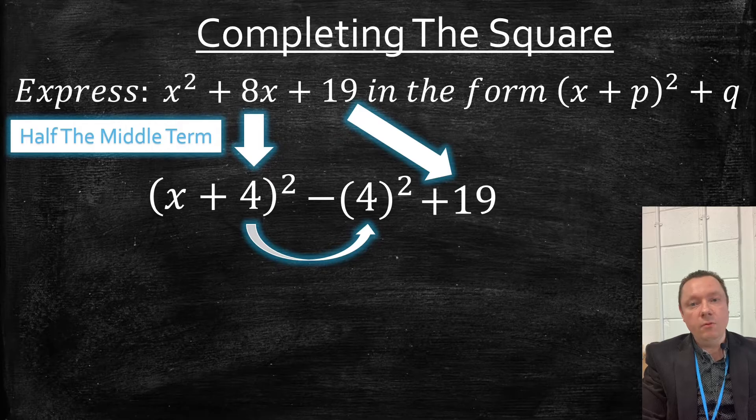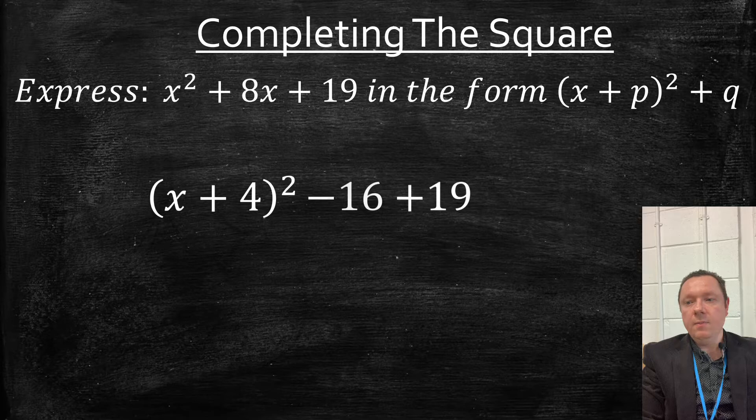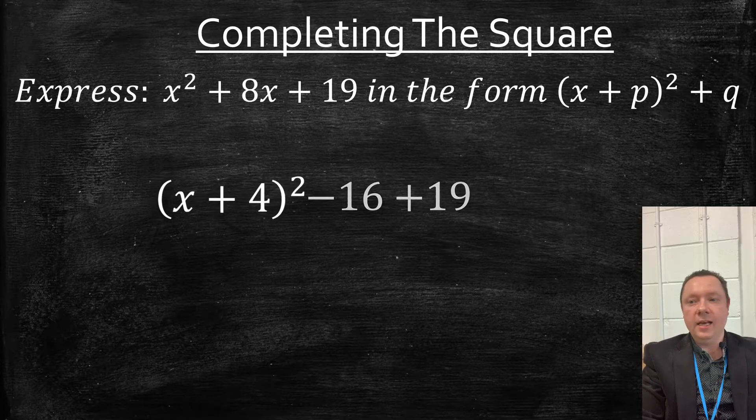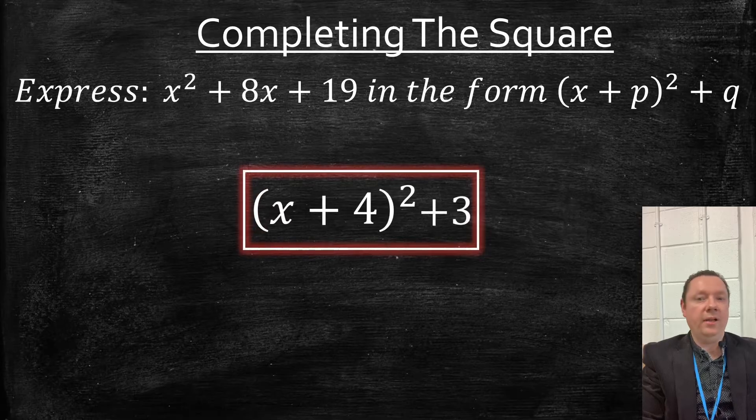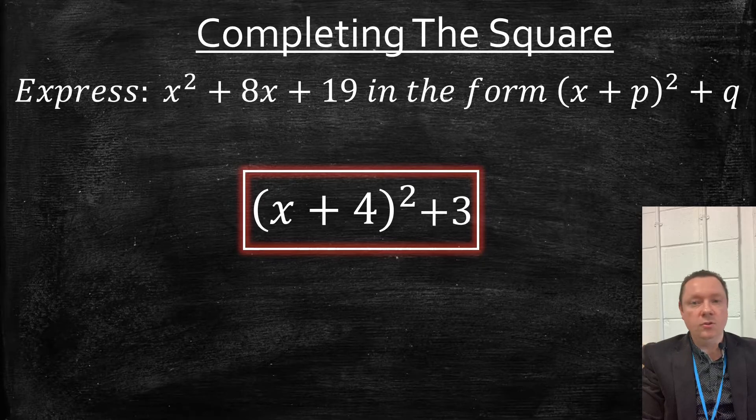So we need to work out 4 squared and take it away from 19. We've got (x + 4)² - 16 + 19. Well, that gives us (x + 4)² + 3, and that's done. If it asks us what's p and q at this stage, I would say p equals 4 and q equals 3.